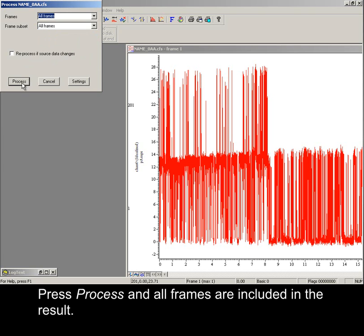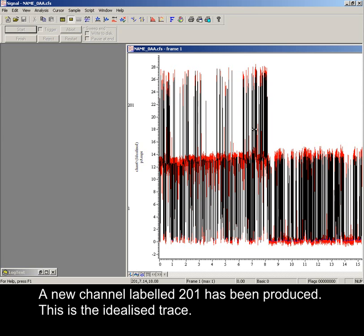Press Process, and all frames are included in the result. A new channel, labeled 201, has been produced. This is the idealized trace.